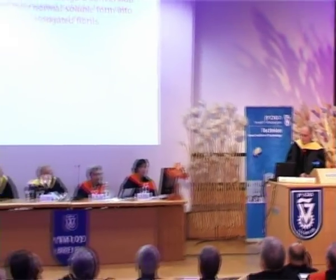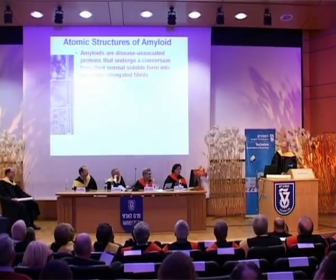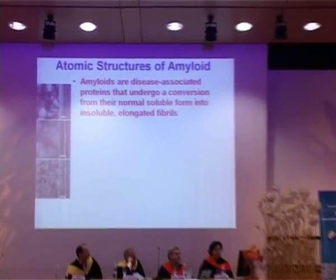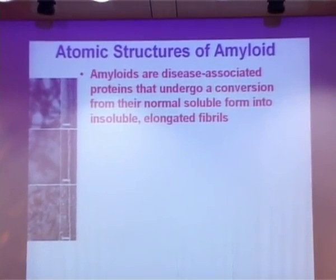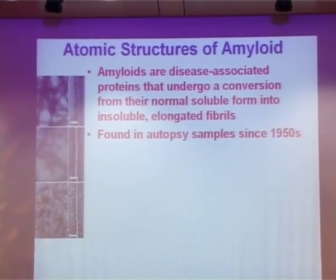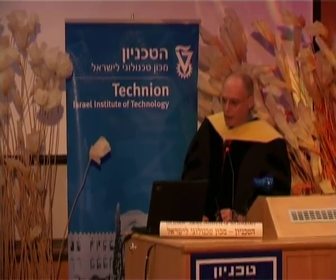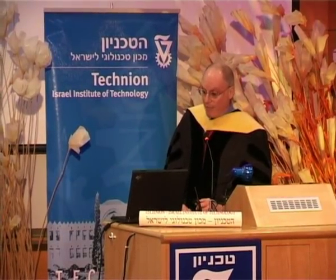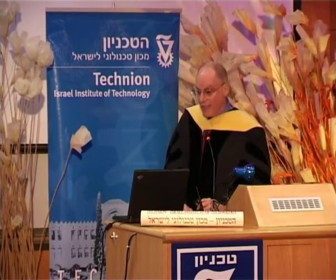So you see in front of you several amyloids, which are fibers that come from normal proteins with normal functions, but they've undergone a conversion from their normal soluble natures into an insoluble elongated fibril which tends to aggregate. These have been known at least since the 1950s, found in autopsy samples from patients with many different diseases, including prion diseases like mad cow disease and Alzheimer's, dialysis-related amyloidosis, and even diabetes type 2.